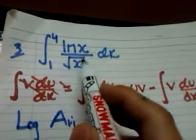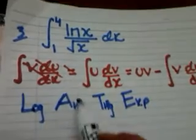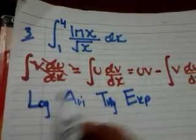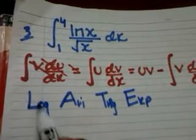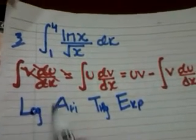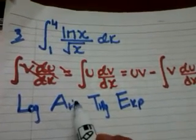Let's look. ln x by root x. ln x is logarithmic, root x is arithmetic. So from LATE, the logarithmic function should be first and the arithmetic should be second. Therefore, u should be ln x and dv by dx should be root x.